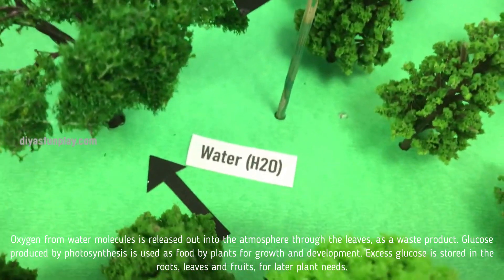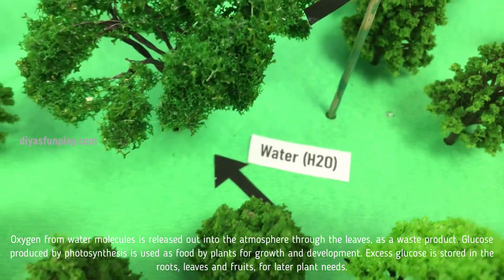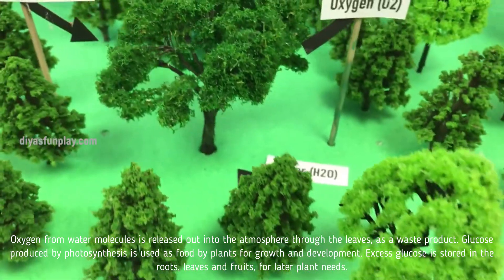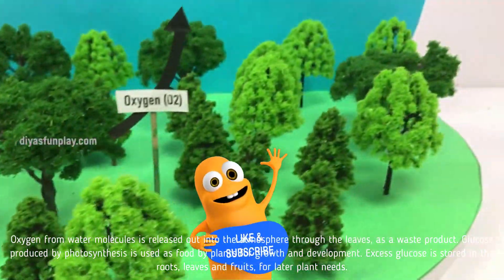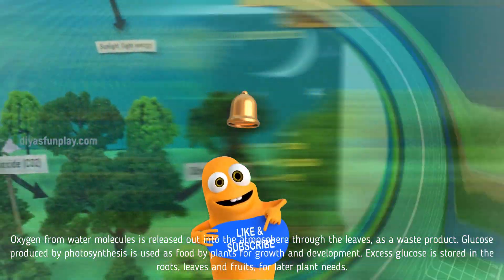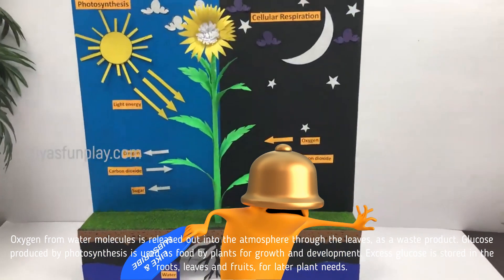Glucose produced by photosynthesis is used as food by plants for growth and development. Excess glucose is stored in the roots, leaves, and fruits for later use.